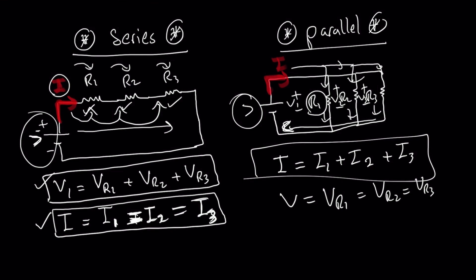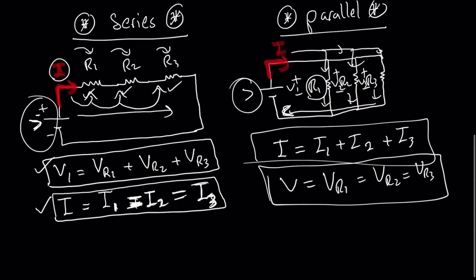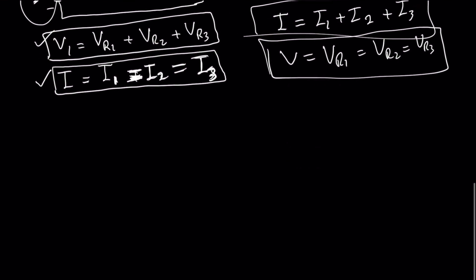The difference between series and parallel: in a series connection the voltage splits because components are connected one after the other, absorbing energy from the battery sequentially, while the current is the same. In a parallel connection the current splits amongst the different resistors because of the parallel arrangement, but the voltage is the same across all the components.